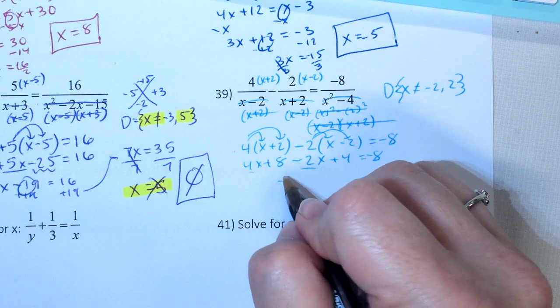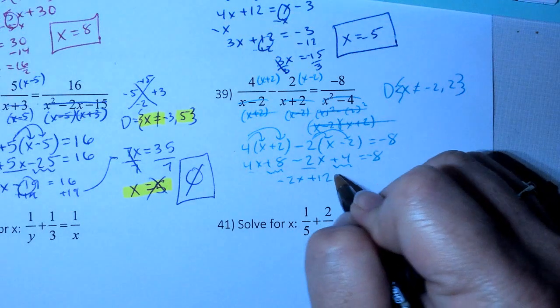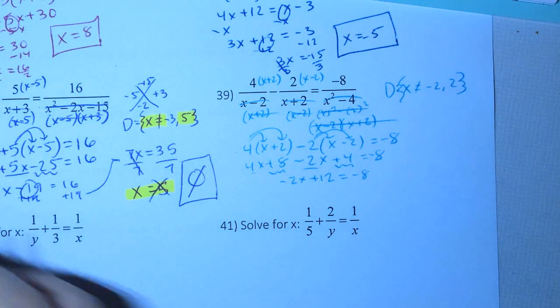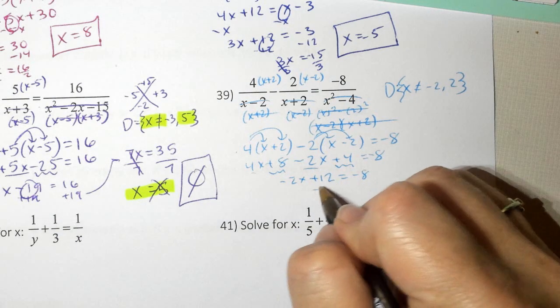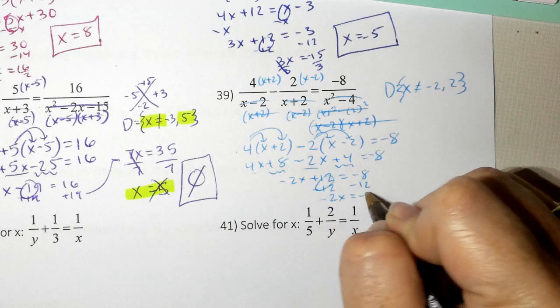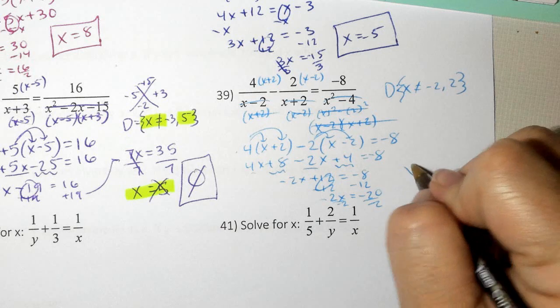So this gives me 2x plus 12 equals negative 8. Minus 12, minus 12. And I get 2x equals negative 20. Divide by 2, divide by 2, and I get x equals 10.